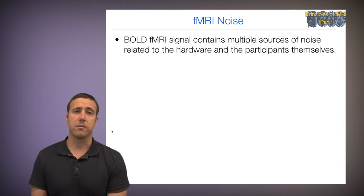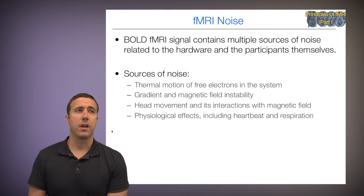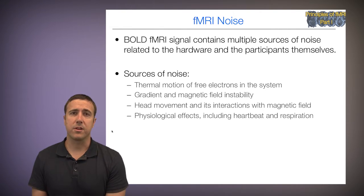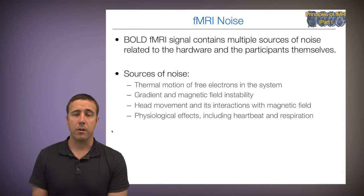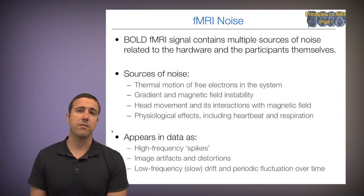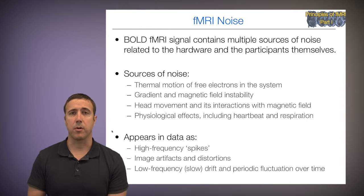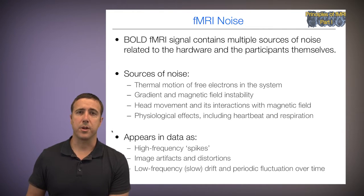Bold fMRI signal contains multiple sources of noise related to the hardware and also to the participants themselves and what they do in the scanner. Sources of noise include thermal motion or thermal noise caused by free electrons in the system, gradient and magnetic field instability causing spikes, head movement and its interaction with the magnetic field which can have complicated effects on noise properties. And physiological effects including heartbeat and respiration and their effects on the movement of the chest wall and also on parameters that interact with the vasculature like CO2 levels. These artifacts appear in the data as high frequency spikes, image artifacts and distortions that affect all or part of the image for some or all time points or slices, and low frequency or slow drift across time as well as periodic fluctuations at particular frequencies.